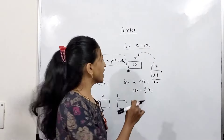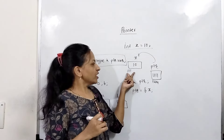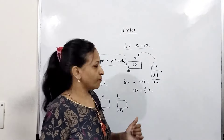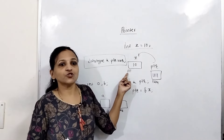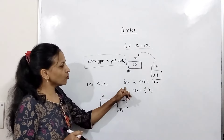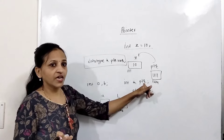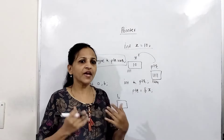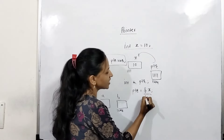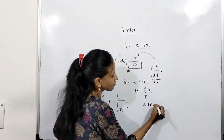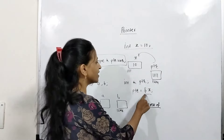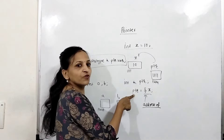For example, we have created an integer variable x with 4 bytes reserved, and suppose its address is 1111. If we want to store x's address in another variable, we create a pointer: int *ptr. Then we write ptr = &x. The address-of operator (&) returns the address of x, which is 1111, and stores it in ptr.